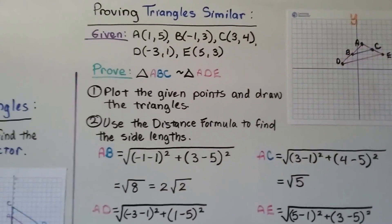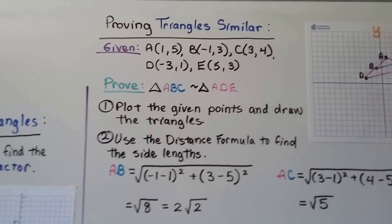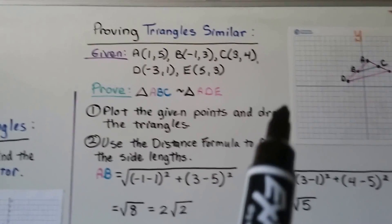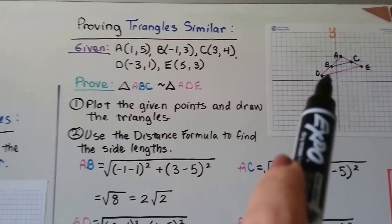Proving triangles similar. Given these ordered pairs for a, b, c, d, e, we need to prove that triangle ABC is similar to triangle ADE.